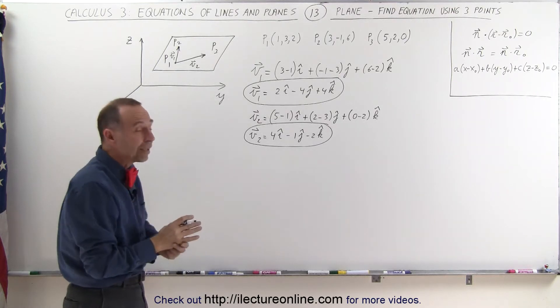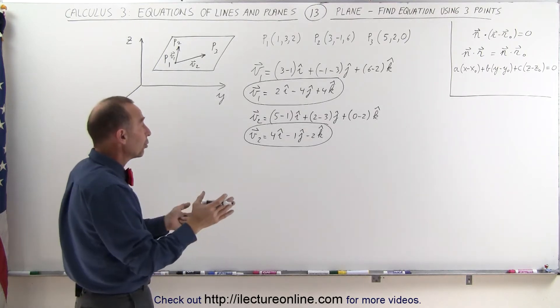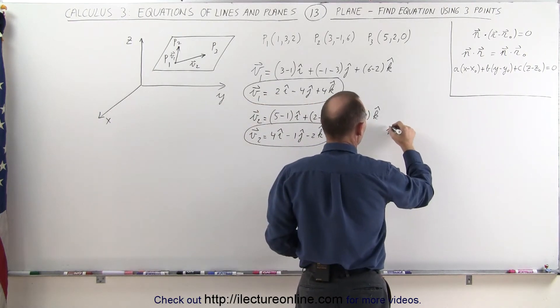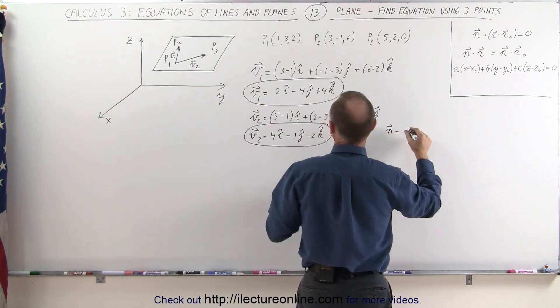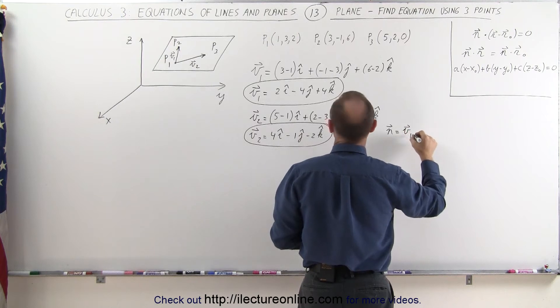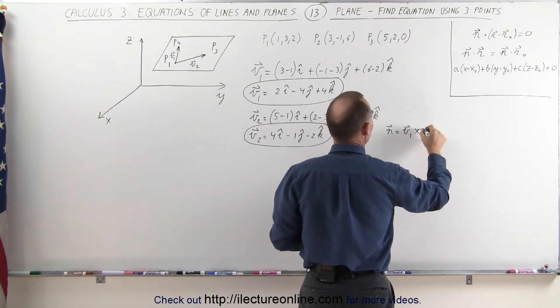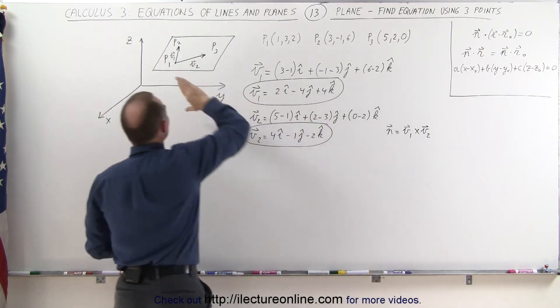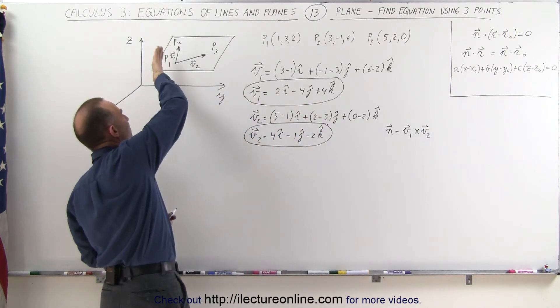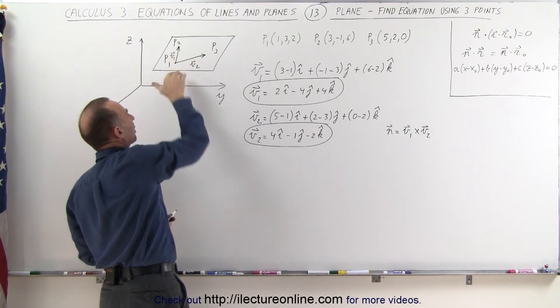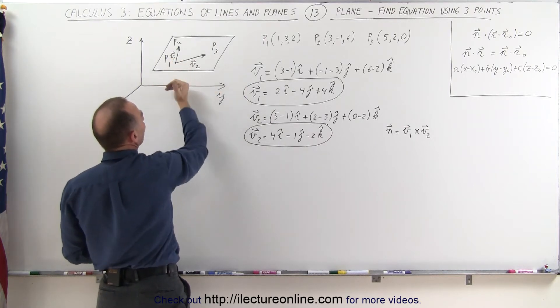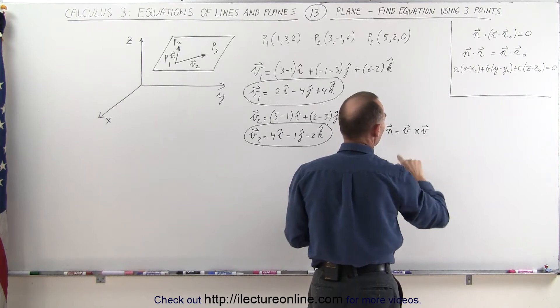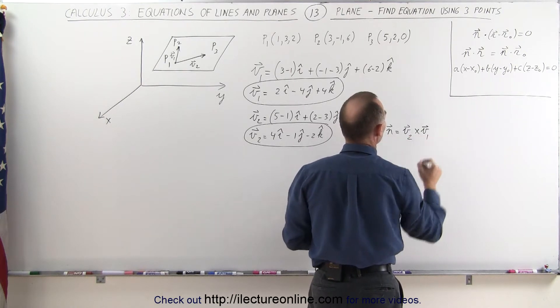Now I can use those two vectors to find the orthogonal vector by simply doing the cross product. I can now say that the orthogonal vector is equal to the cross product of v1 multiplied times v2. Now notice, if I go v1 times v2, I'm pointing downward. I think I want to go v2 times v1, so I point upward from our perspective. I'm going to turn these around, so it's v2 times v1.